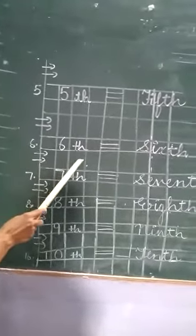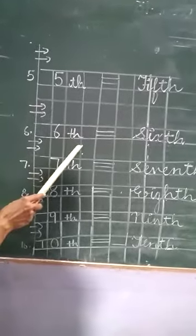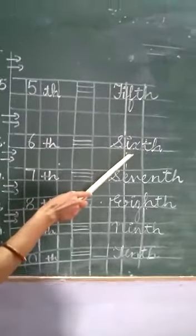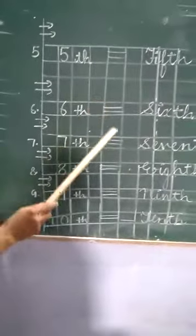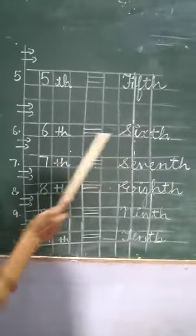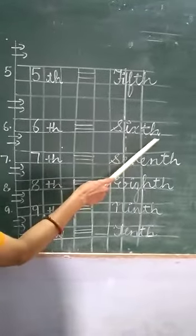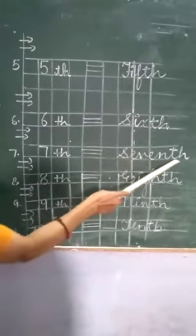This is 6, sixth. And the spelling of sixth is S-I-X-T-H. Listen, one thing you have to see. The spelling of 6, we add TH. The spelling of 7, we add TH.